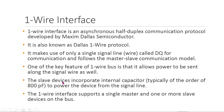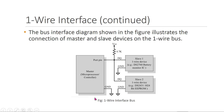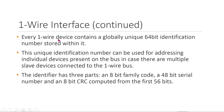The slave device incorporates an internal capacitor to power the device from the signal line, typically of the order of 800 picofarads. The One-Wire interface supports a single master and one or more slave devices on the bus. A bus interface diagram shown in the figure illustrates the connection of master and slave devices on the One-Wire bus.